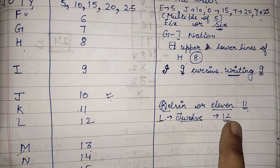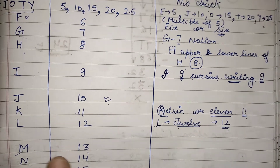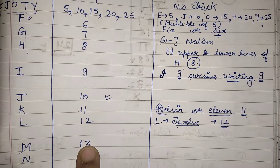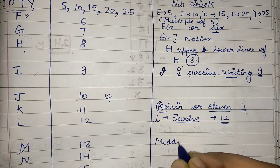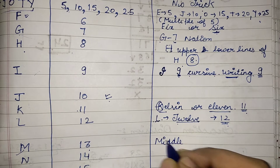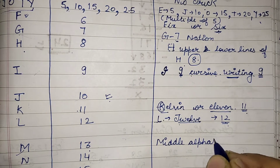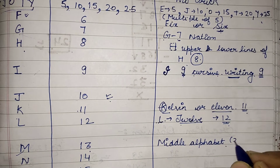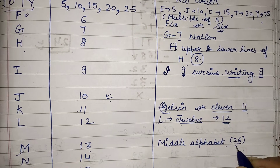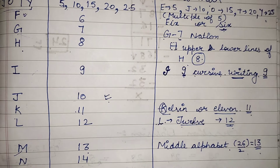Next, M is the thirteenth alphabet. M is very simple to remember because everyone knows that M is the middle alphabet of A to Z. There are 26 alphabets total, so M is present at the middle — 26 divided by 2 gives us the midpoint, placing M at the thirteenth position.